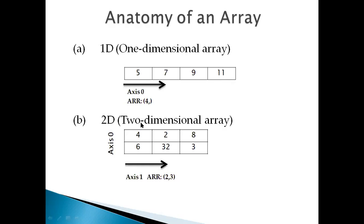For a 2D array, here we have rows and columns. This is called a 2-row 3-column array — 2 rows and 3 columns, so 2 multiplied by 3. This is called a 2D array. Any number of rows and columns you can create. The horizontal is called a row and the vertical is called a column.